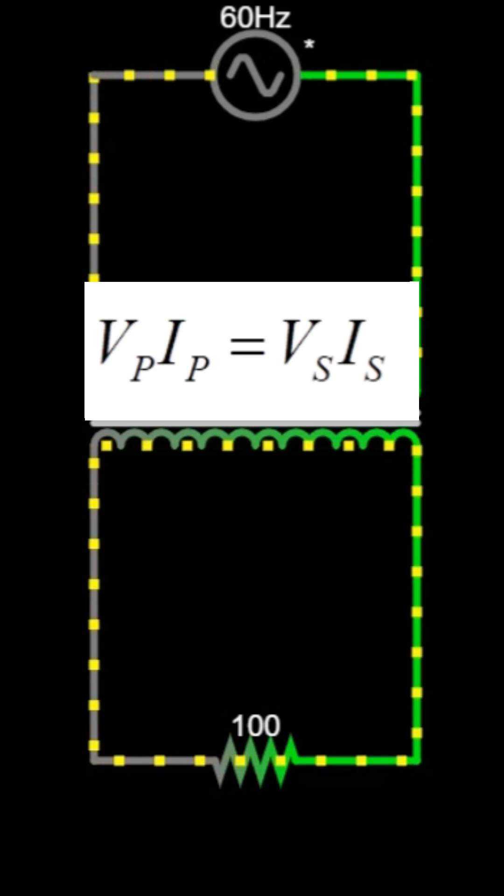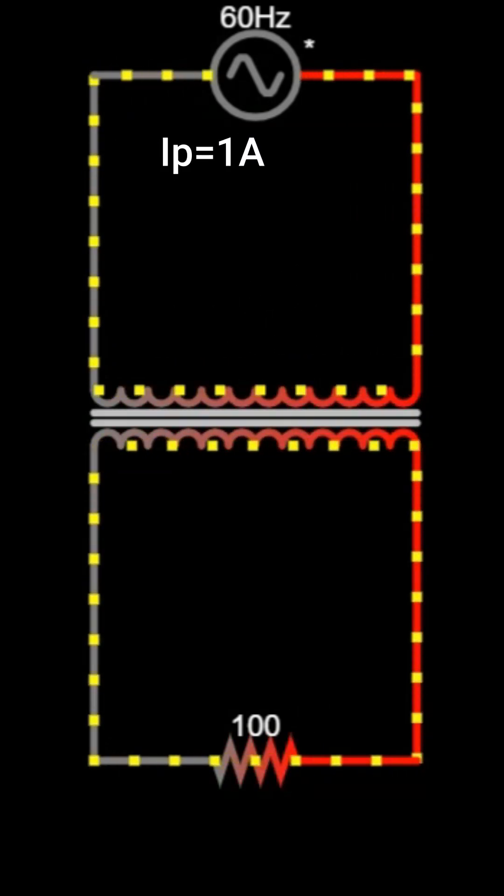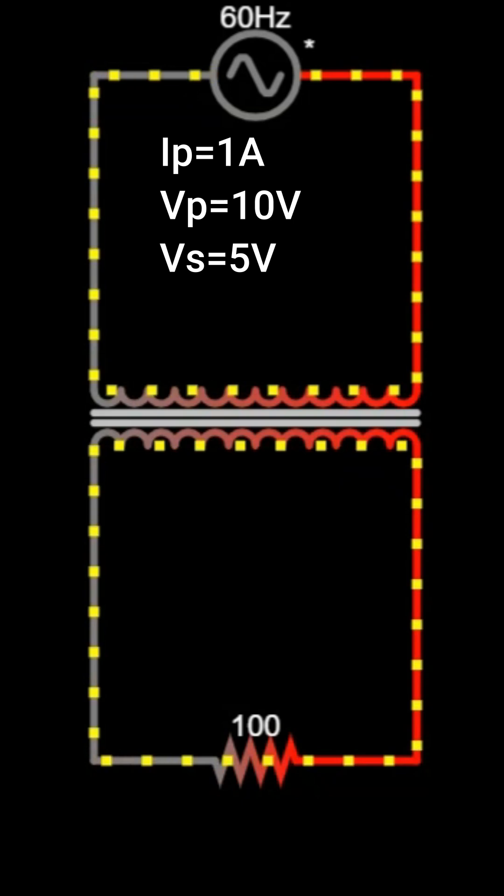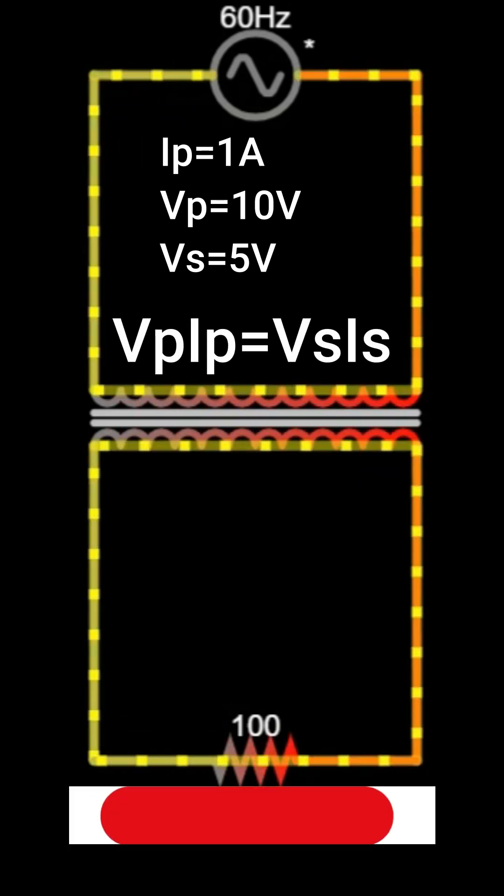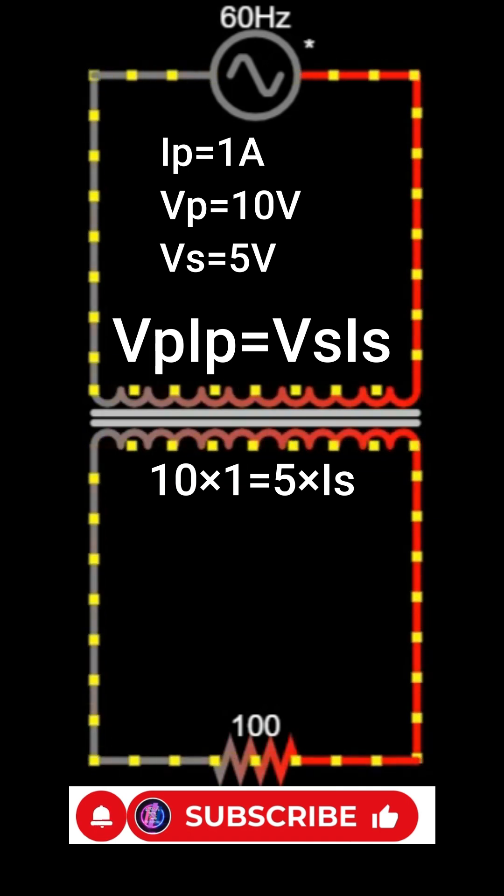Next, let's calculate the current. If the input current is 1 ampere at 10 volts, we apply the power formula: Vp times Ip equals Vs times Is. That is 10 times 1 equals 5 times Is.